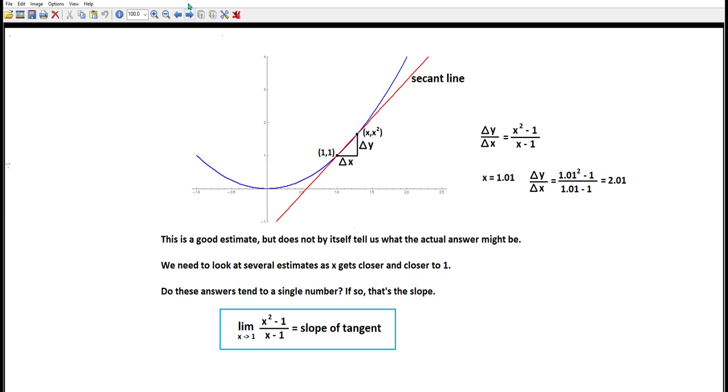And the process that we described is called a limit process. The symbol we use is the limit as x goes to 1, which is the x value at the point of tangency, of the thing that we use to estimate that slope. And if that limit exists, whatever that means, that's the slope of the tangent.